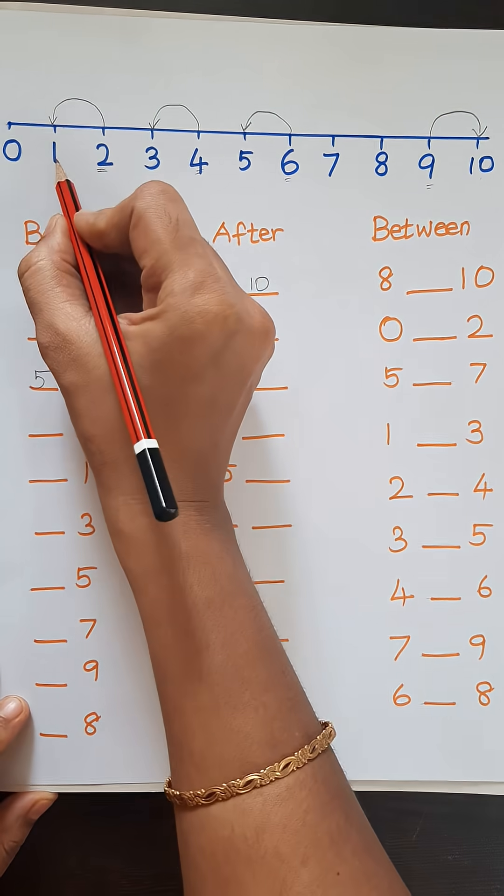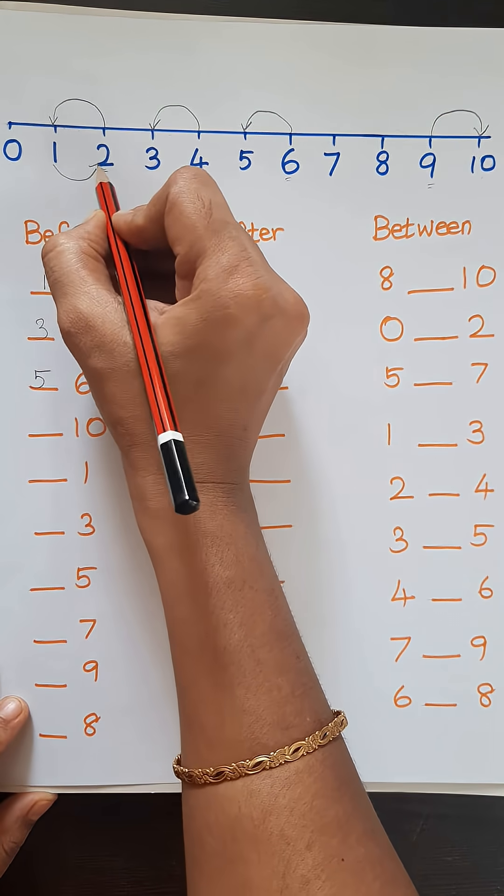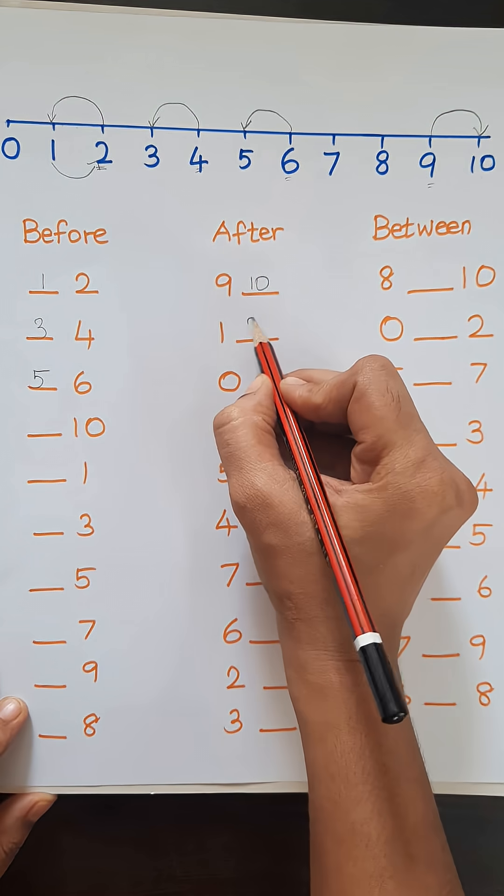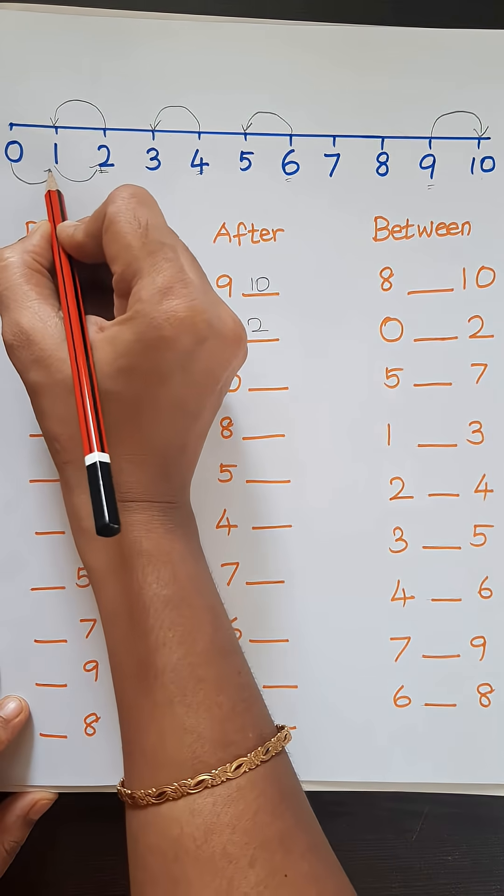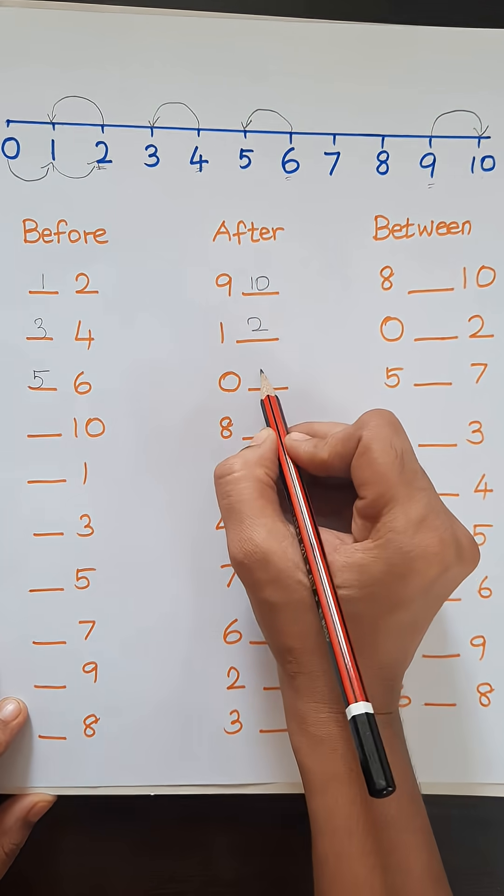Next number is 1. What comes after 1? 2. So we will write 2. Next number is 0. So what comes after 0? 1. So we will write 1.